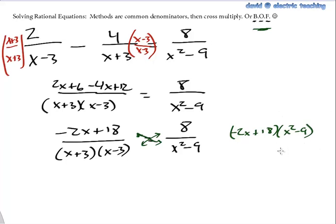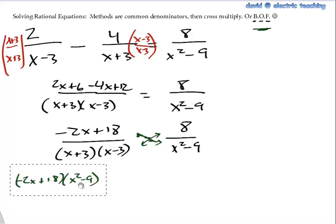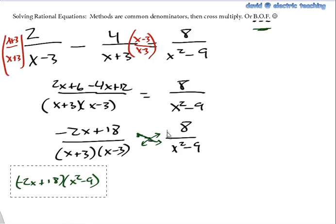And this would be equal to. I need to move that over. Let me move that over here real quick. Take me a quick second. But I need to move. I need to then set that equal to the other cross multiply. The other cross multiply which is 8 times x plus 3 and x minus 3.